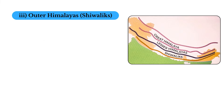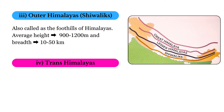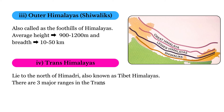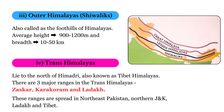Outer Himalayas, also known as Shivaliks, are the foothills of the Himalayas. The average height is 900 to 1200 meters and breadth is 10 to 50 kilometers. Above the Great Himalayas are the Trans Himalayas, which lie to the north of Himadri and are also known as Tibet Himalayas. There are three major ranges in Trans Himalayas: Zaskar, Karakoram, and Ladakh. This range spreads across northeast Pakistan, Jammu and Kashmir, Ladakh, and Tibet.